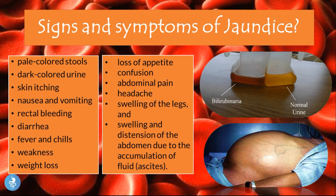What are the signs and symptoms of jaundice? Jaundice, or hyperbilirubinemia, presents with pale-colored stools, dark-colored urine, itchy skin, nausea and vomiting, rectal bleeding, diarrhea, fever and chills, weakness, weight loss, loss of appetite, confusion, abdominal pain, headache, swelling of the legs, and swelling and distension of the abdomen due to accumulation of fluid, which is called ascites.